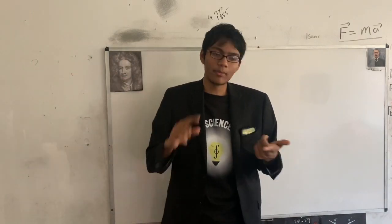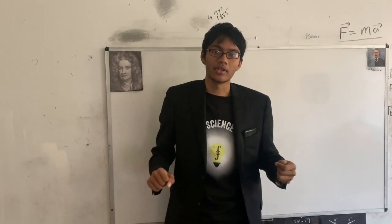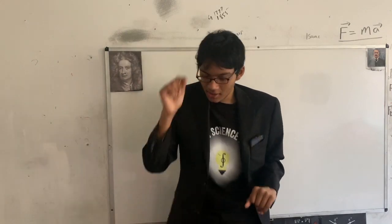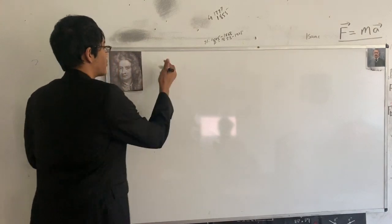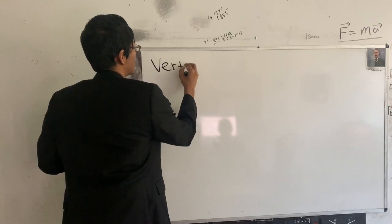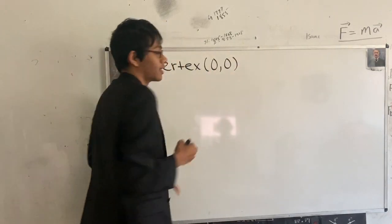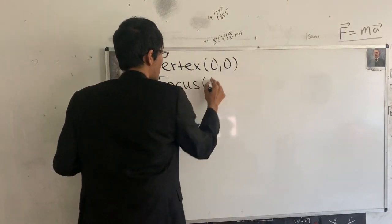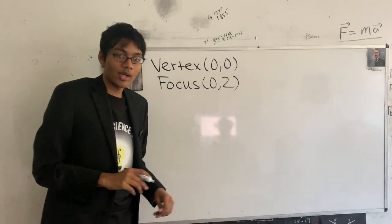We'll be given, for example, the location of the vertex, the location of the focus, or the equation for the directrix. Using those components, we have to find the equation of the parabola. Here's our first example: we have the vertex of our parabola at (0, 0), also known as the origin, and we have the focus of the parabola at (0, 2).